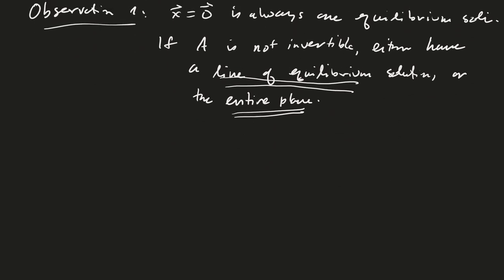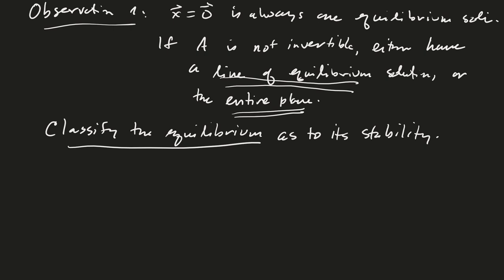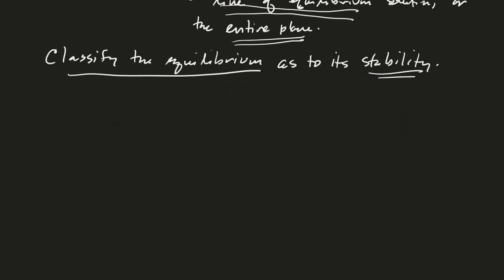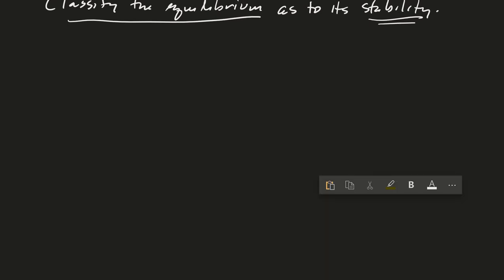And so what we're going to be talking about now is trying to classify the equilibrium as to its stability. And as we go through our different cases, we'll learn about what we mean by stability. Okay, so let's talk about our first case, case one.